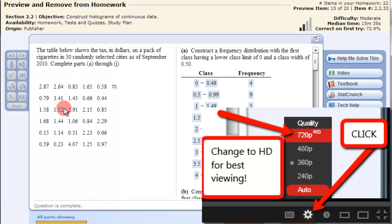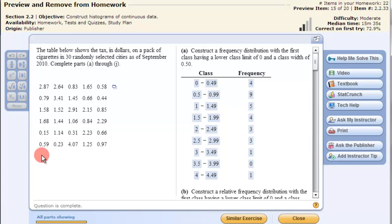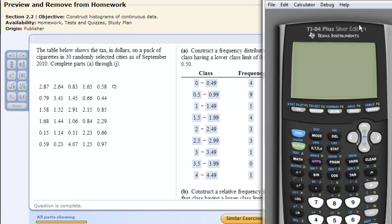In this video we're going to look at creating a histogram on the TI-83/84 calculator with raw data. Here's our raw data in this MyMathLab problem. We can type it into the calculator and we need to put that into a list.